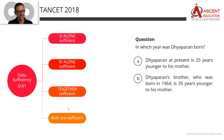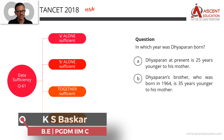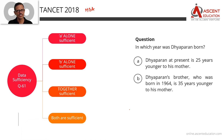We are solving a past year TANCET paper — specifically the TANCET 2018 MBA paper data-sufficiency question. This is the first data-sufficiency question in the section, question number 61. Before we solve it, let's quickly understand what the four answer options are, since in TANCET the answer options are the same every year, and then we'll proceed to solving this question.